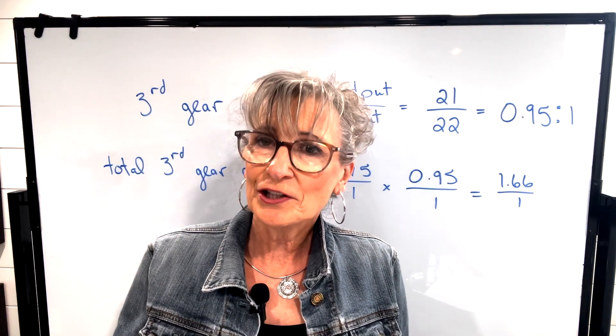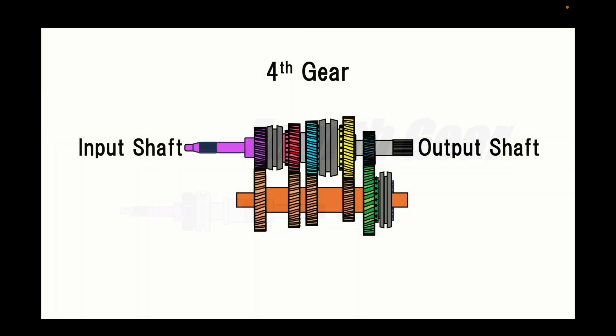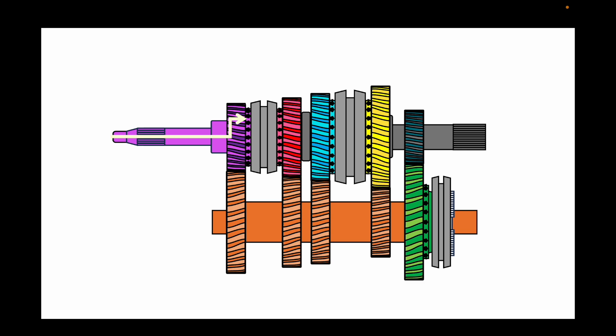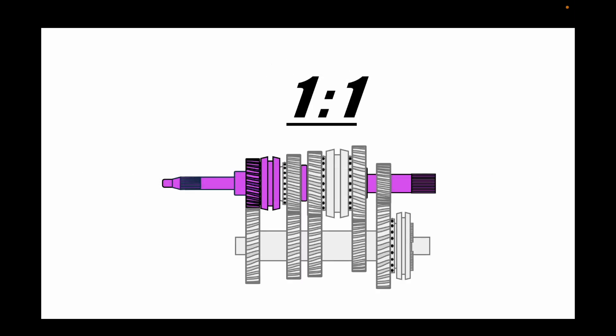Now let's look at the easiest gear ratio to calculate: fourth gear. In fourth gear, the input shaft is directly locked to the output shaft by the shift collar. The power flow is from the engine to the input shaft, through the shift collar, and then to the output shaft. This is called direct drive, and the total gear ratio is 1 to 1 — the input shaft makes one revolution for every one revolution of the output shaft, meaning the output shaft turns at exactly the same speed as the input shaft.